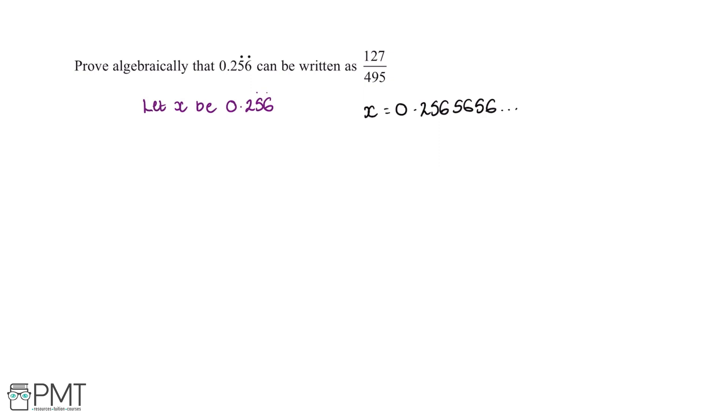Now in order to complete this question, what we're going to want to do is multiply the value of x by 10 repeatedly until we get two values which have exactly the same numbers after the decimal point.